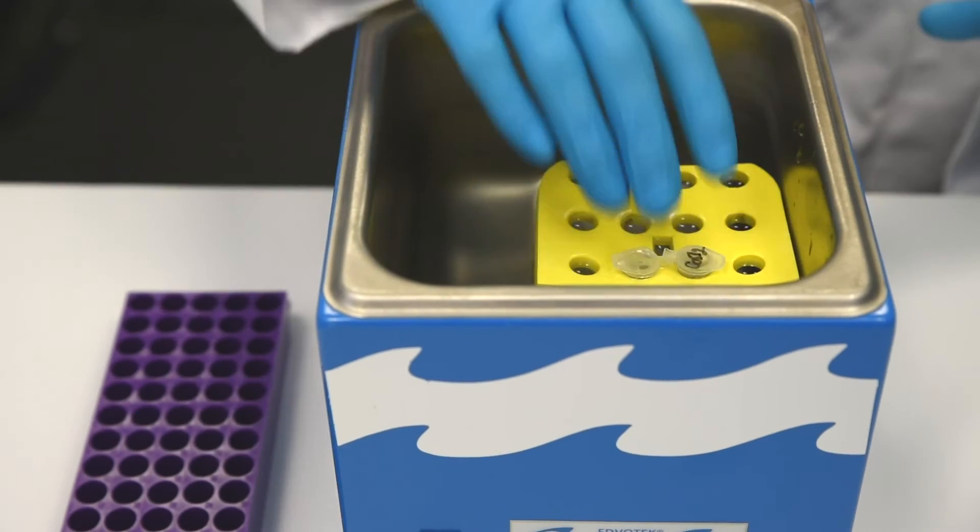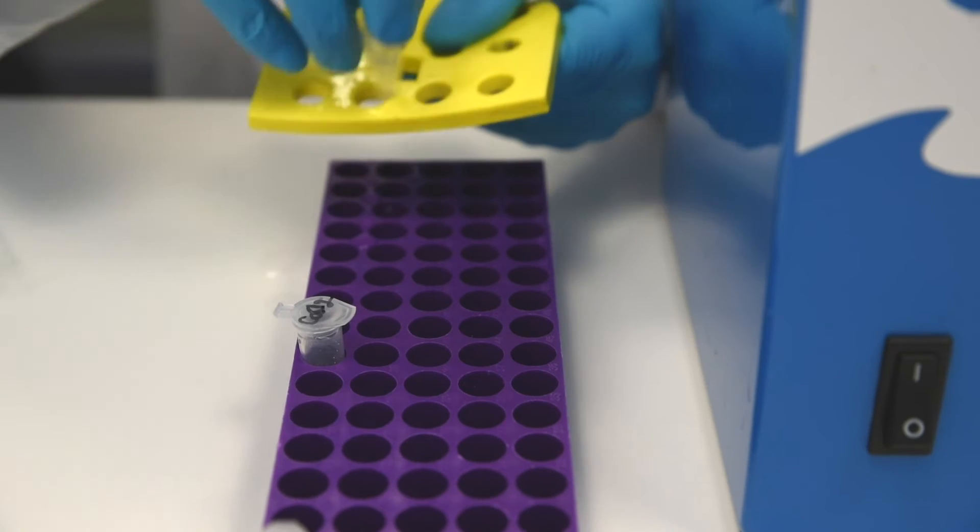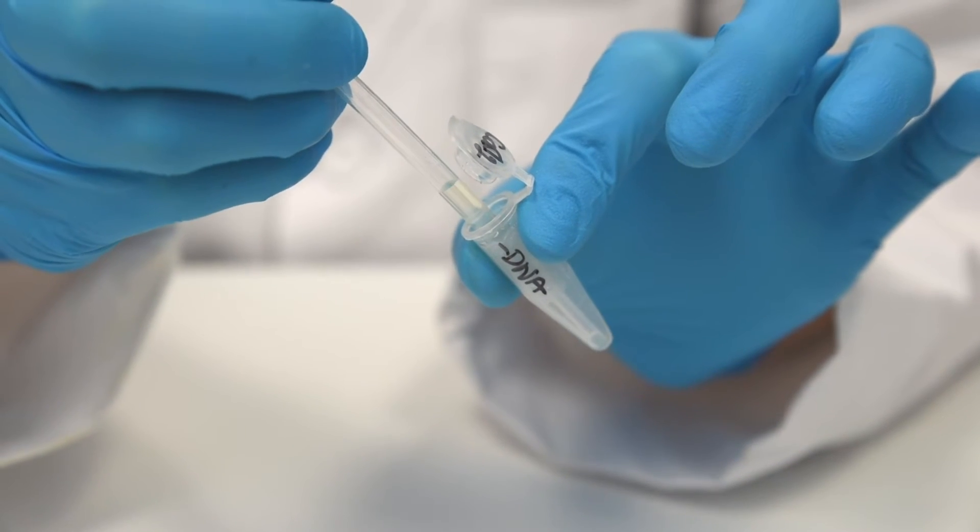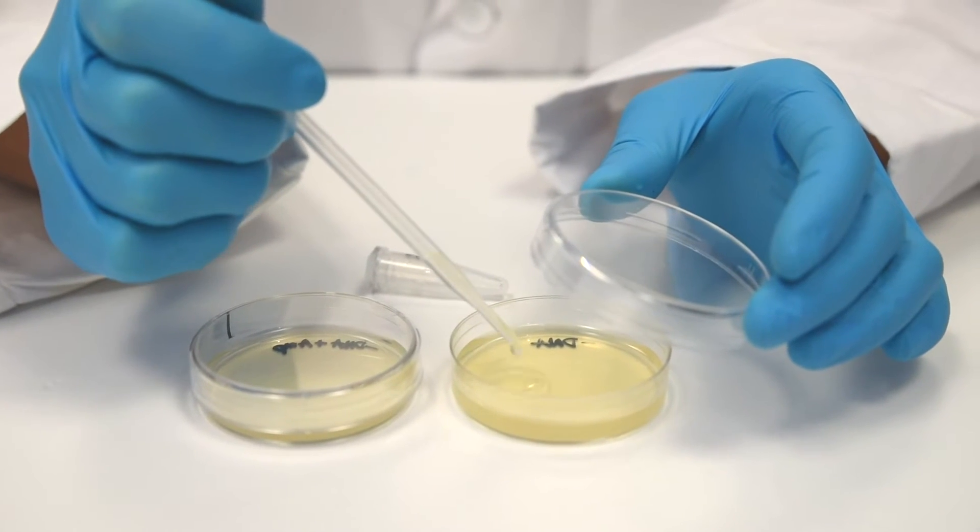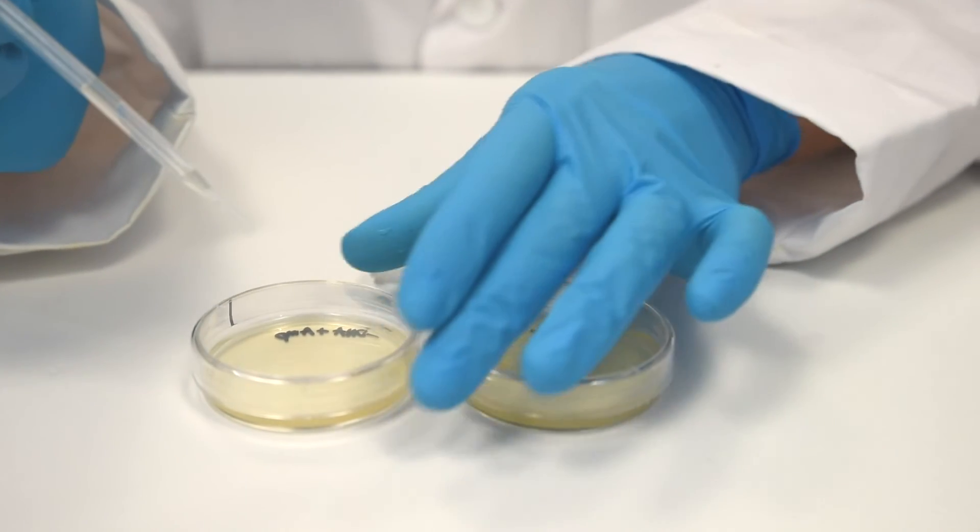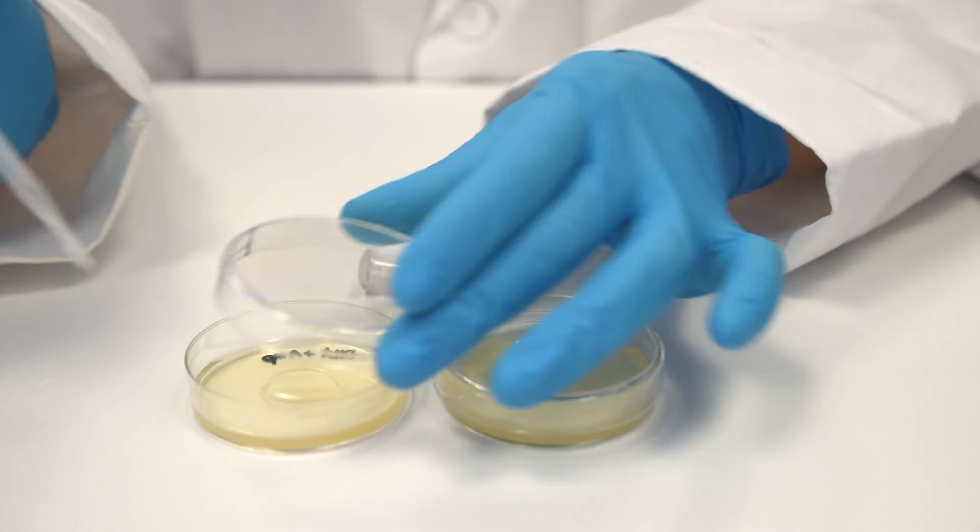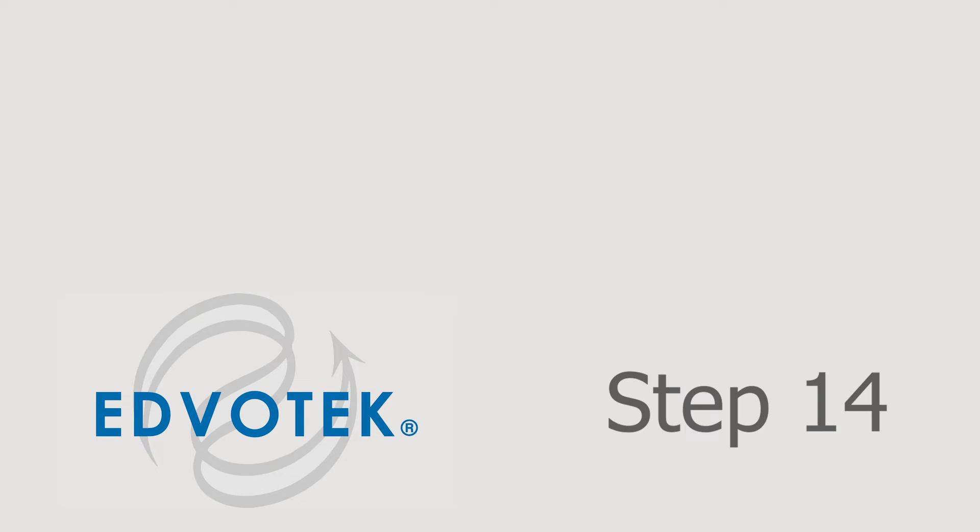Step 12. After the recovery period, remove the tubes from the water bath. Step 13. Using a sterile 1 ml pipette, transfer 250 microliters of the recovered cells from the tube labeled minus DNA to the middle of the minus DNA and the minus DNA plus amp plates.